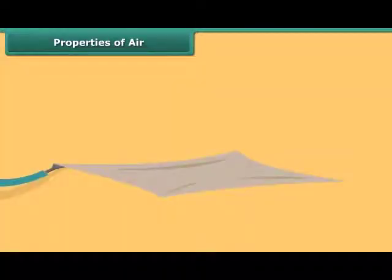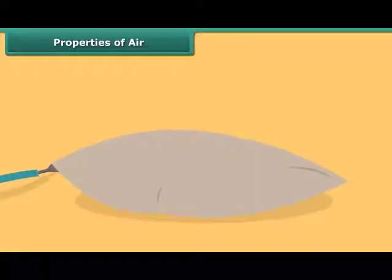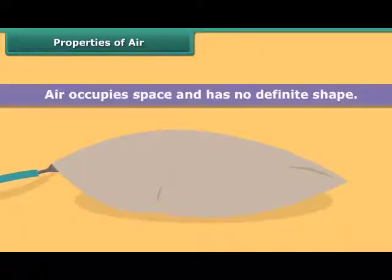Air that was present in the pitcher is coming out. This shows that air occupies space. Inflate an air pillow. What do you see? It grows in size. This shows that air occupies space and has no definite shape.